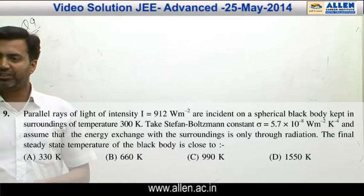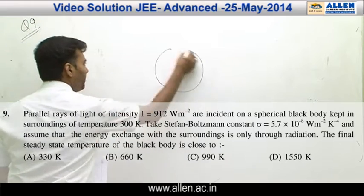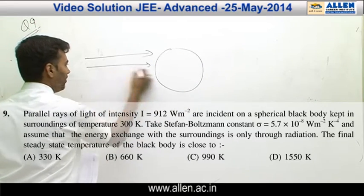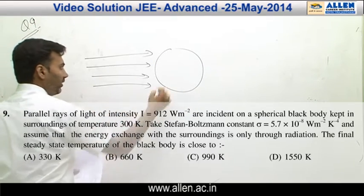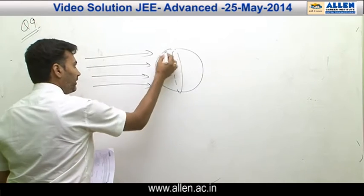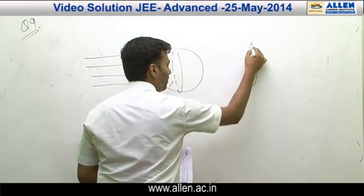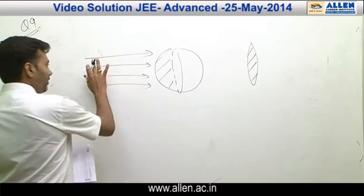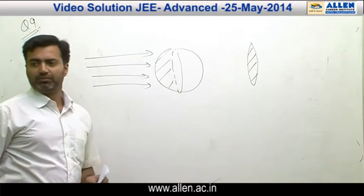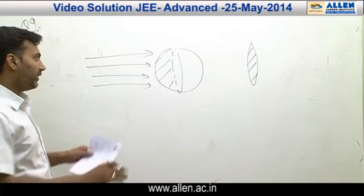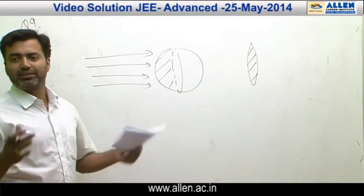So question number 9 is a wonderful question on the idea of projection area. What they said was a beam of light was to fall on the shown sphere. Now do remember since only half of the sphere is exposed, the projection area would be a circle. So whatever energy is being received by this sphere per unit time is also the same as it radiates out.